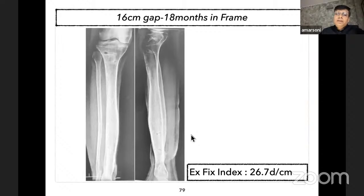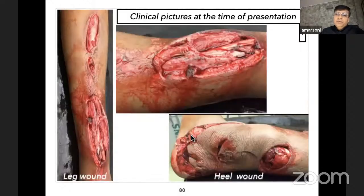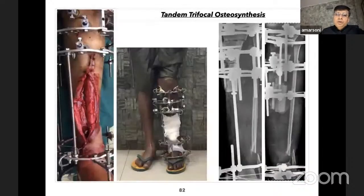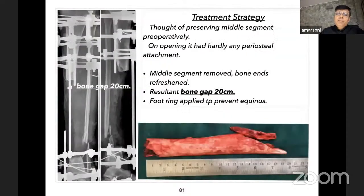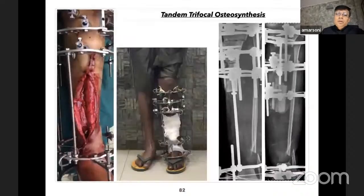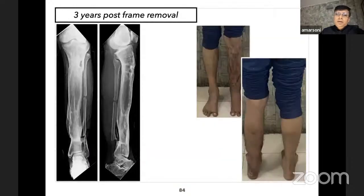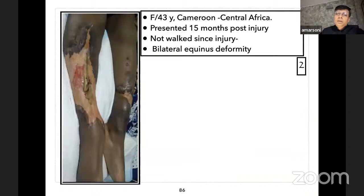One of my cases: segmental tibia fracture with a large wound. My initial plan was to retain the middle fragment but once opened, the whole fragment was avascular—a 20 centimeter bone gap. I performed tandem trifocal osteosynthesis. Frame was removed at eleven and a half months; external fixator index was 17.2 days per centimeter. At three years post-frame removal there is excellent functional outcome.